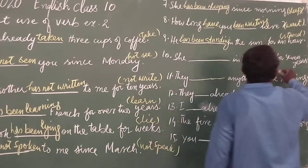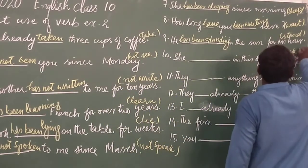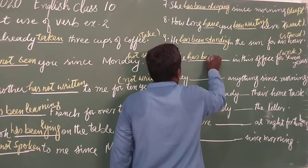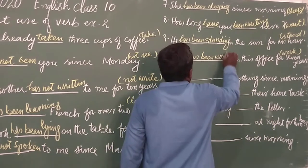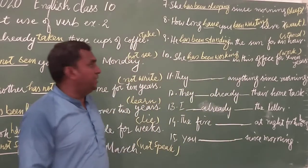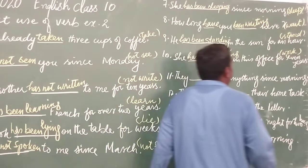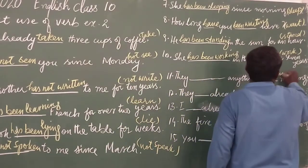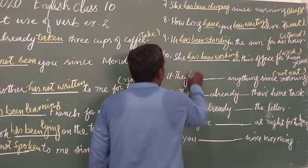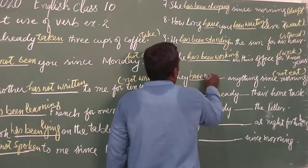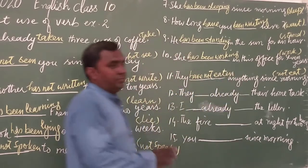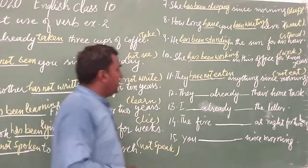Sentence ten: 'She dash in this office for seven years' — answer is: She has been working in this office for seven years. Sentence eleven: 'They dash anything since morning' — with 'not eat': They have not eaten anything since morning.